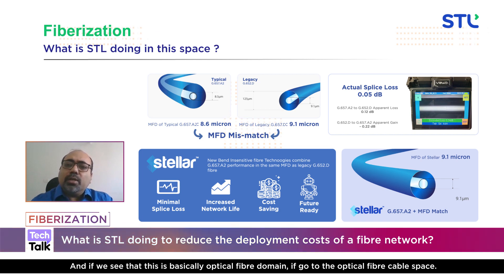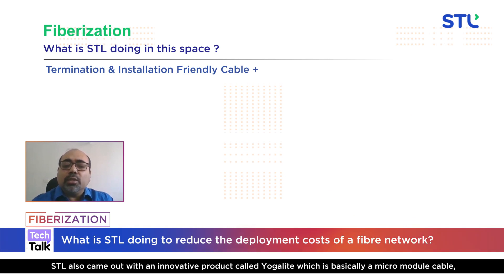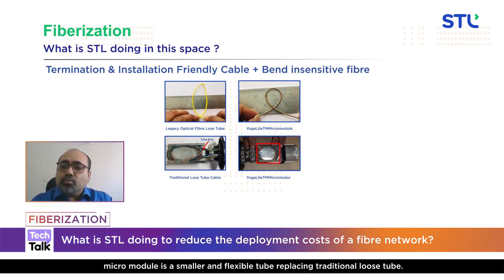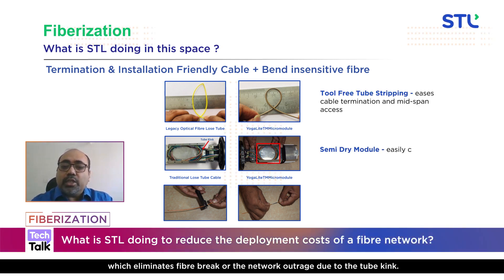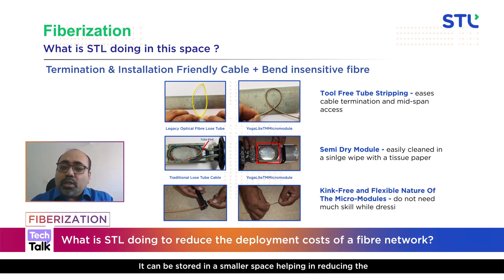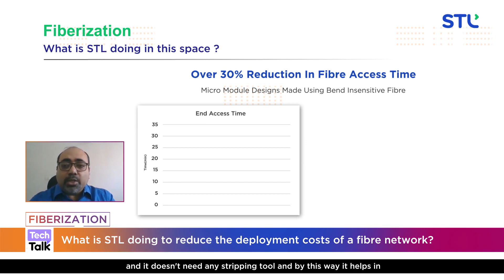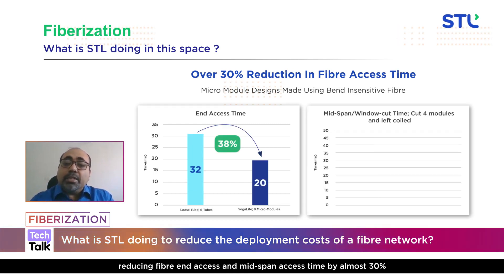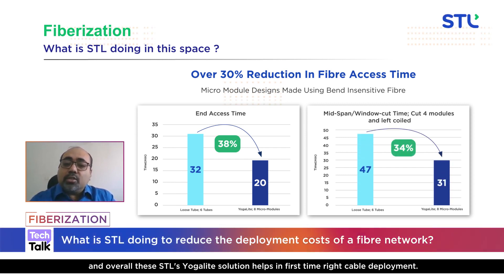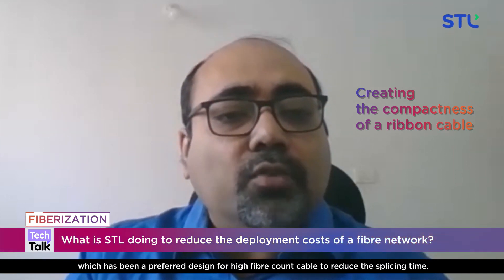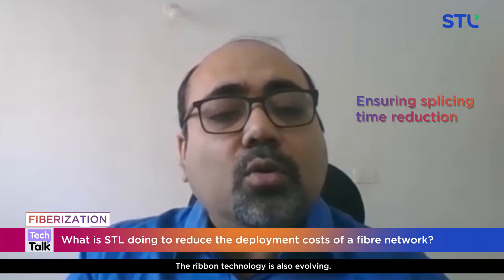In the optical fiber cable space, STL came out with an innovative product called Yoga Light — a micro module cable. The micro module is a smaller, flexible tube replacing the traditional loose tube, with several advantages. Its kink-free nature eliminates fiber breaks or network outages due to tube kinking. It can be stored in a smaller space, reducing the footprint of the closures. Additionally, a semi-dry micro module can be stripped by fingertips without any stripping tool, reducing fiber access and splice access time by almost 30%, enabling first-time-right cable deployment.